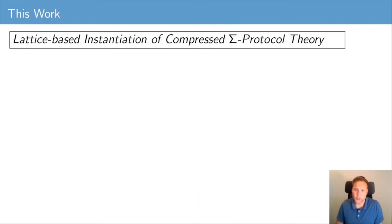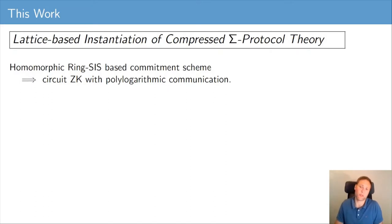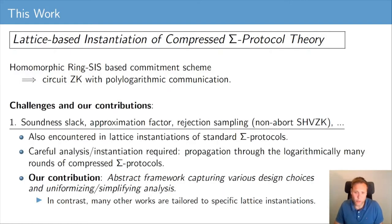We answer this natural question in the affirmative by constructing a lattice-based instantiation of compressed sigma protocol theory. On a very high level, we do this by replacing, for example, the Pedersen vector commitment scheme by a homomorphic vector commitment scheme based on a lattice assumption. In principle, this leads to a circuit-satisfiability proof of knowledge based on lattice assumptions with polylogarithmic communication complexity. However, when going through the motions, we encounter a number of challenges.